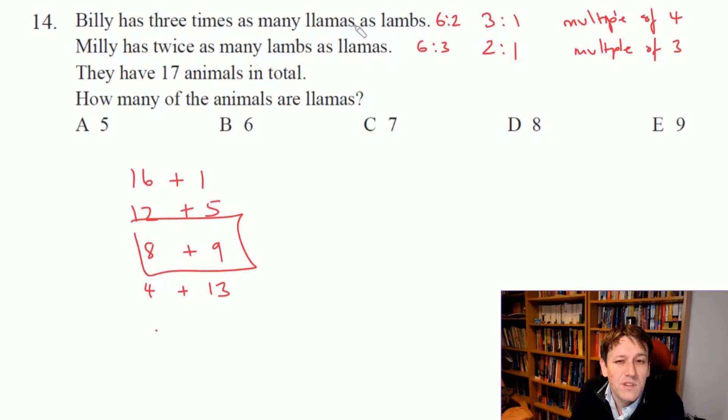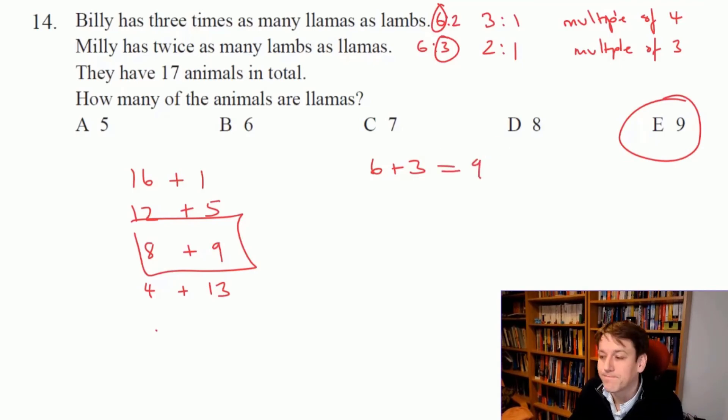Whereas Milly's got twice as many lambs as llamas, so for her the llamas are the smaller group. The total number of llamas here is 6 plus 3, and the answer is 9, which is E.